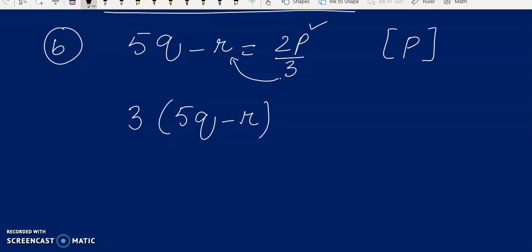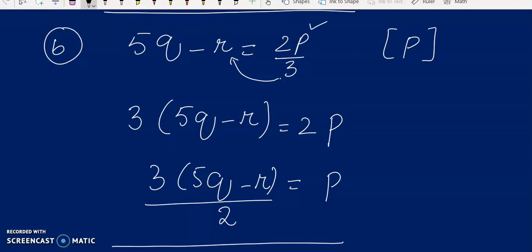Now we are left with 2P. Now this 2 is being multiplied with P. So when it goes to the other side, it will be divided. So this is your answer because P is separated now. Now we do C part.